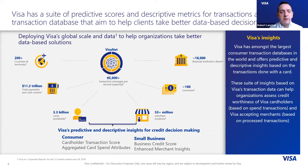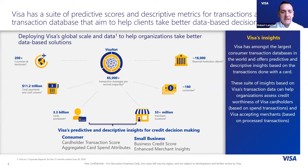We looked at transaction data, and at a high level it can provide incremental insight over traditional data sources. To introduce Visa's central database, VisaNet — it's a huge system that can capture up to 65,000 plus transactions per second, powered across 200 plus countries, with over 16,000 financial institution clients processing trillions of dollars every year. It's now 3.8 billion cards worldwide linked to the Visa network. We've looked at this in two lenses: consumer and small business, but we'll focus on consumer solutions — the cardholder transaction score and aggregated card spend attributes.